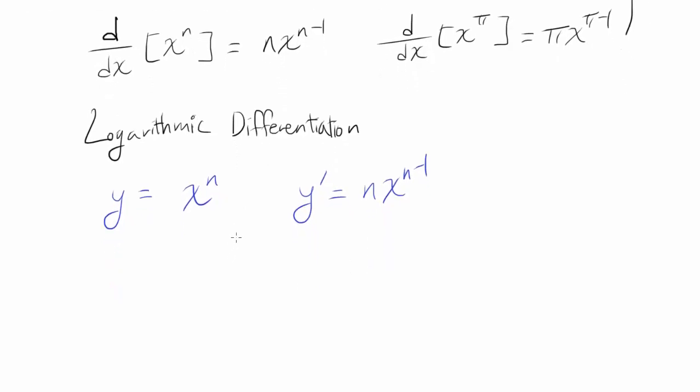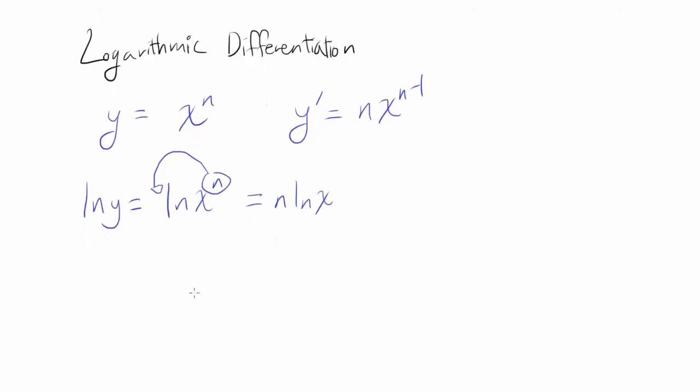How I'm going to start is by taking natural log of both sides, because natural log helps remove the exponent and make it become a constant multiple by property of logarithms. So we have natural log of y is equal to n times natural log of x.